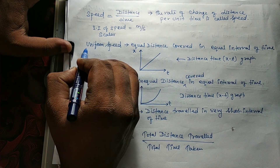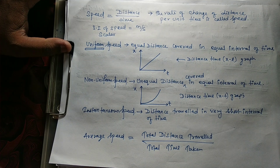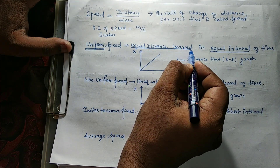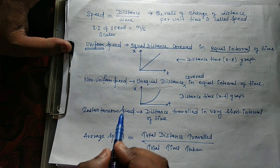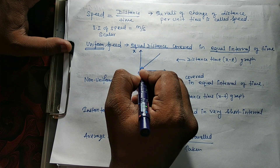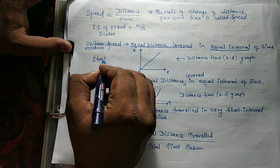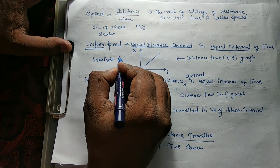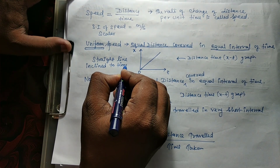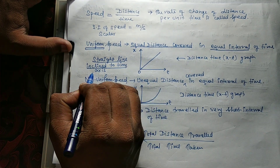Uniform speed. From the word uniform we can analyze that something is uniform here. That means if an object covers equal distance in equal time intervals, that is uniform speed. If we use a displacement-time graph, the x-axis represents time and y-axis represents displacement. Uniform speed appears as a straight line on this graph.